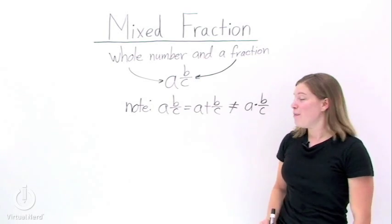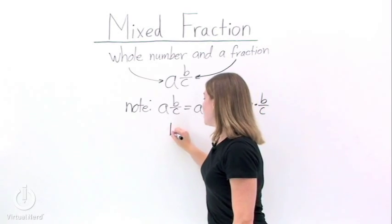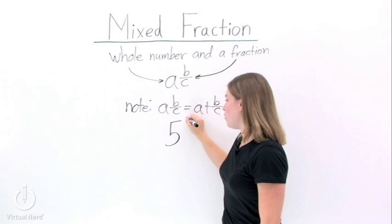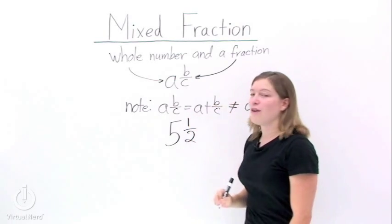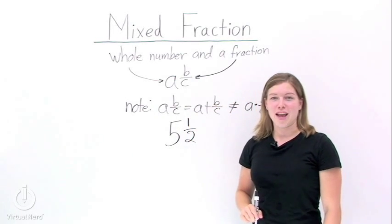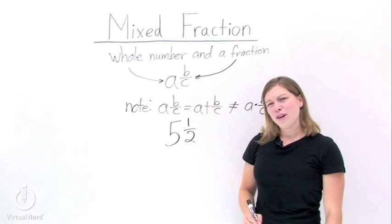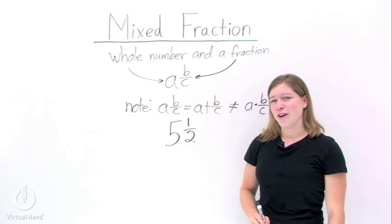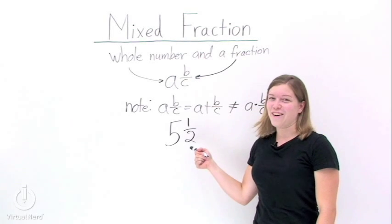Now if we want to represent that in mixed fraction form, all we need to do is write down the whole number of cookies we ate, and then write down the parts of cookies that we ate. There's your mixed fraction form. Although I don't know why you'd want to eat just a part of a cookie. But if you want to, now you can.